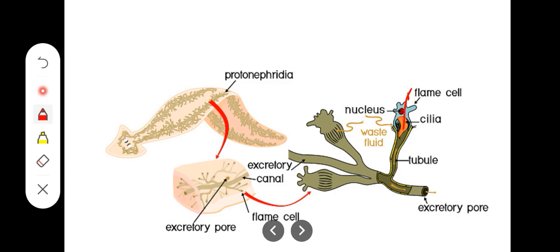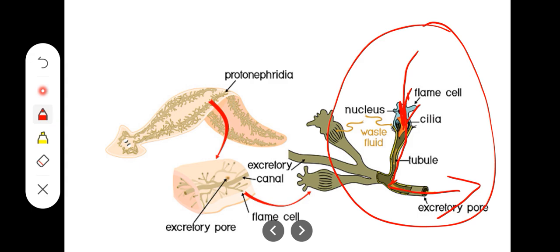You can see the interstitial fluid from the waste product or nitrogenous waste will enter, then move through the excretory duct and excretory pore to be excreted out. This is simple excretion in Planaria.